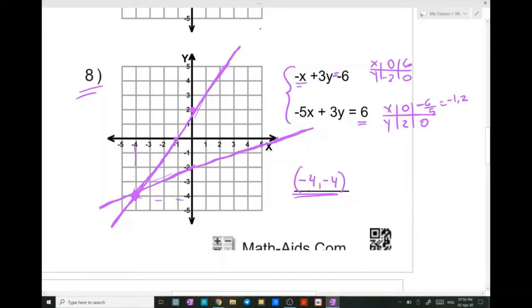So these two coordinates, or this x and this y, they satisfy the system, or they satisfy both equations at the same time.